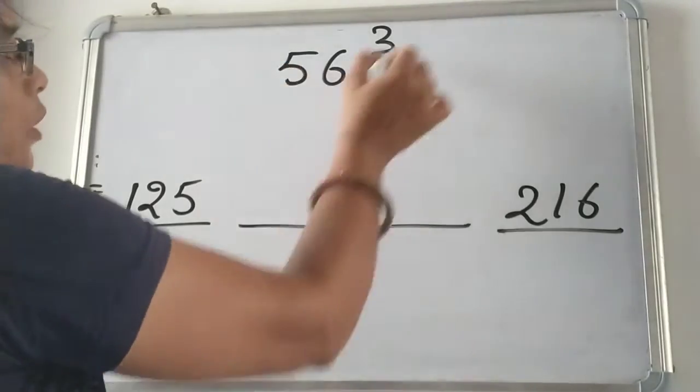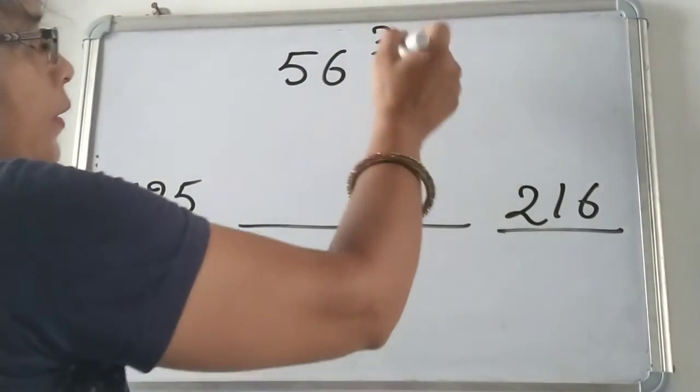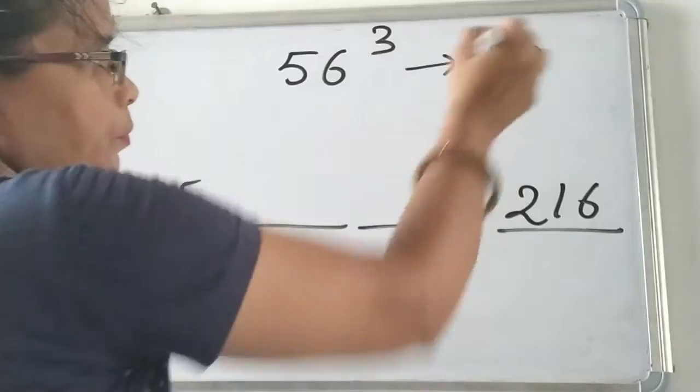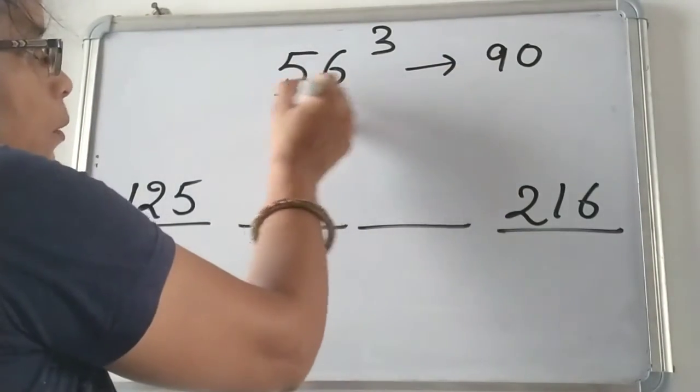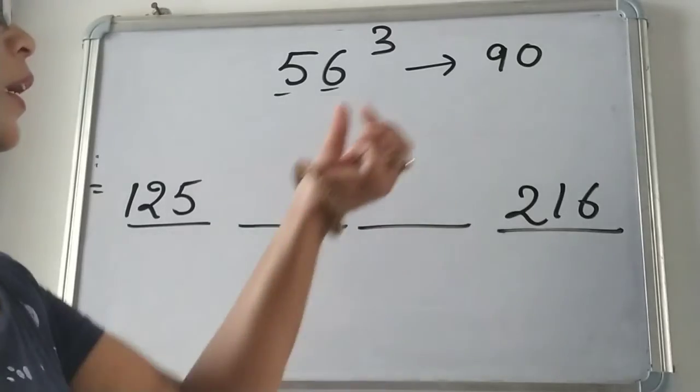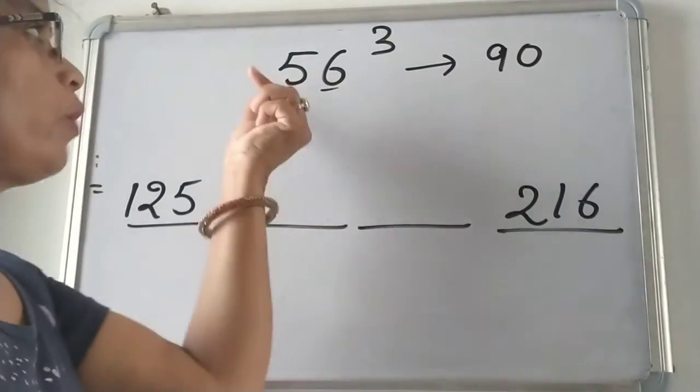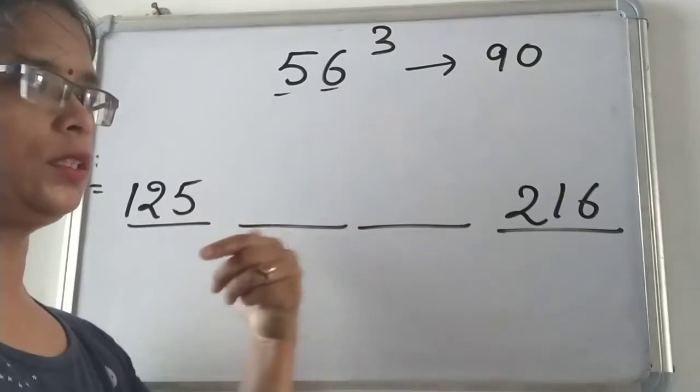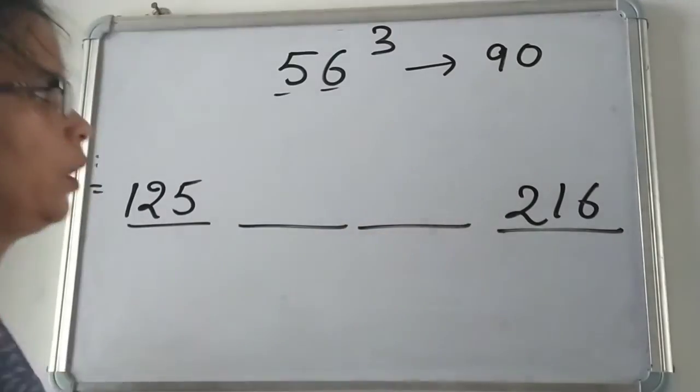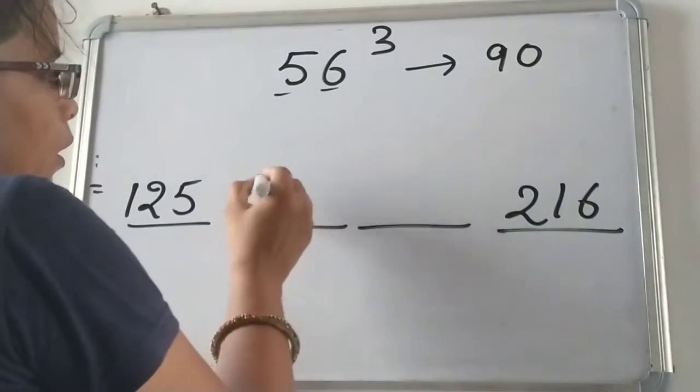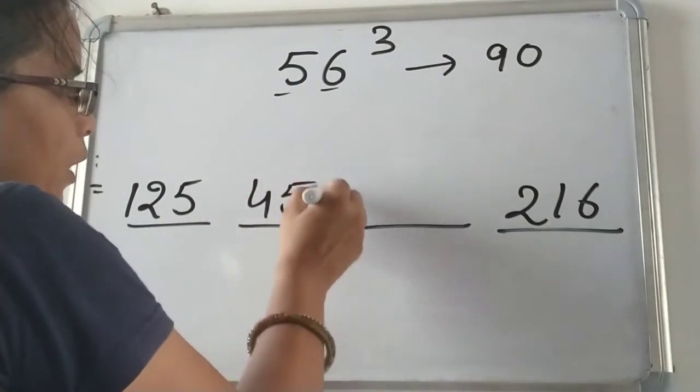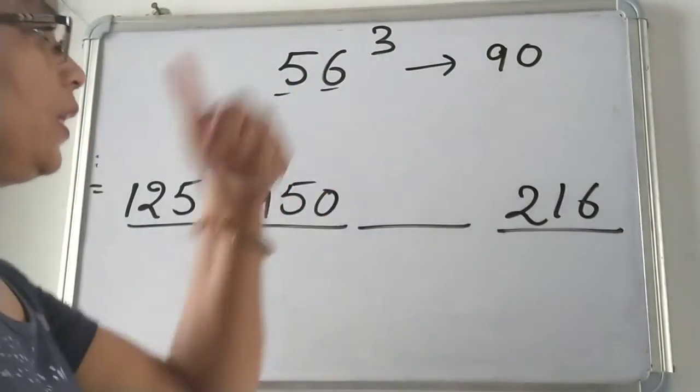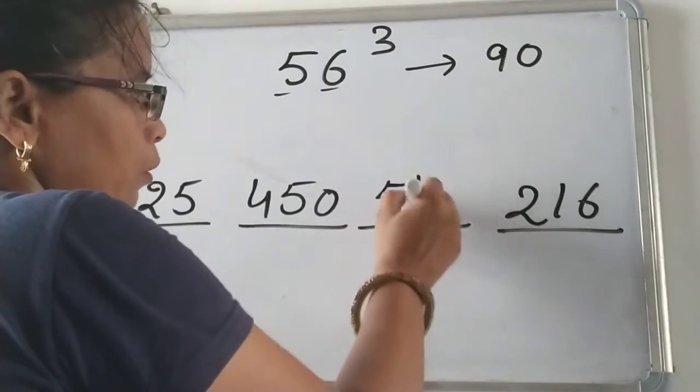Now the multiplication of these numbers is 90. 90 is a multiple of both the numbers. So we will multiply 90 to 5 and 6 to get the second and third number. When we multiply 90 to 5 we get 450 and by 6 we get 540.